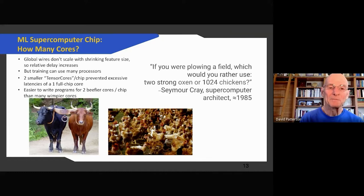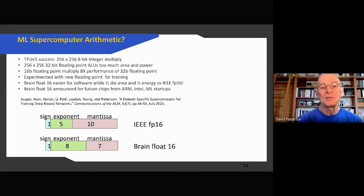What about the supercomputer arithmetic? The TPU v1 success with this 256 by 256 8-bit integer multiply and accumulate, if we did that for 32-bit floating point, that would just be too big, too much area and too much energy to do that on a single chip. 16-bit floating point is much faster, typically eight times faster because the mantissa that you multiply is much smaller. So we experimented with doing floating point using 16-bit floating point.